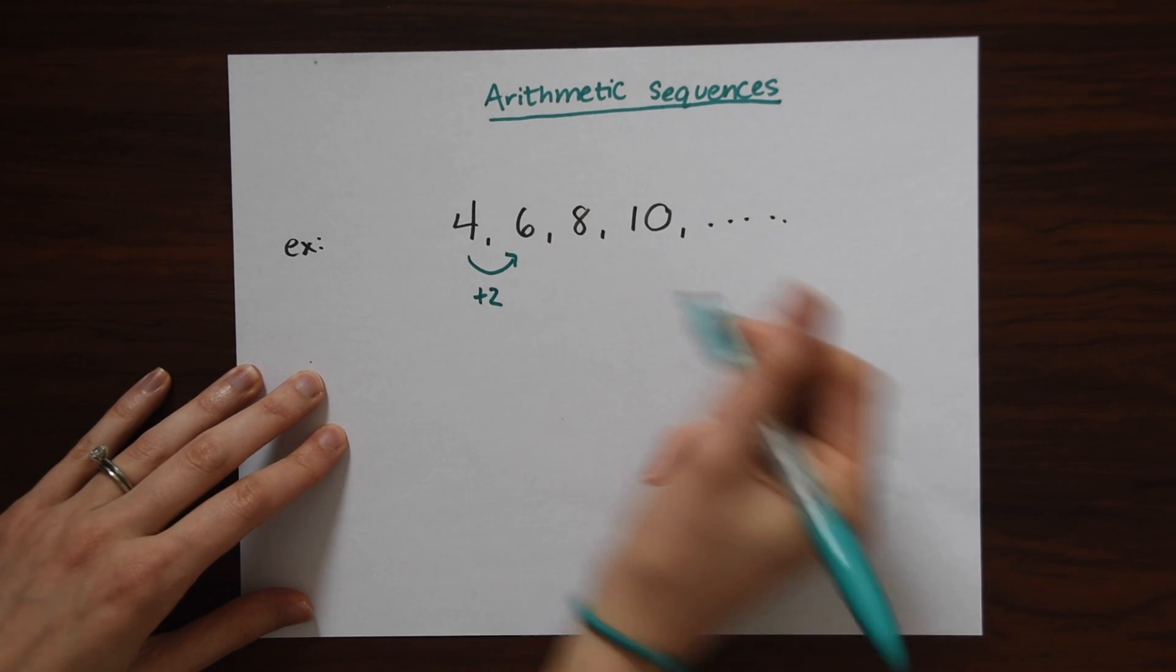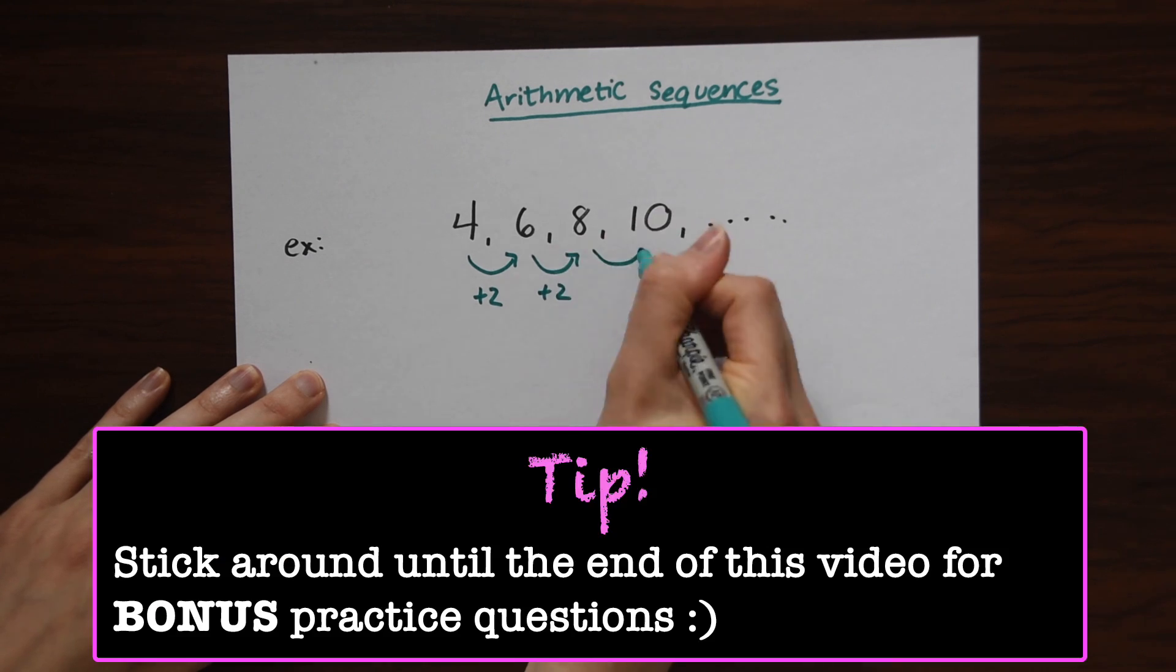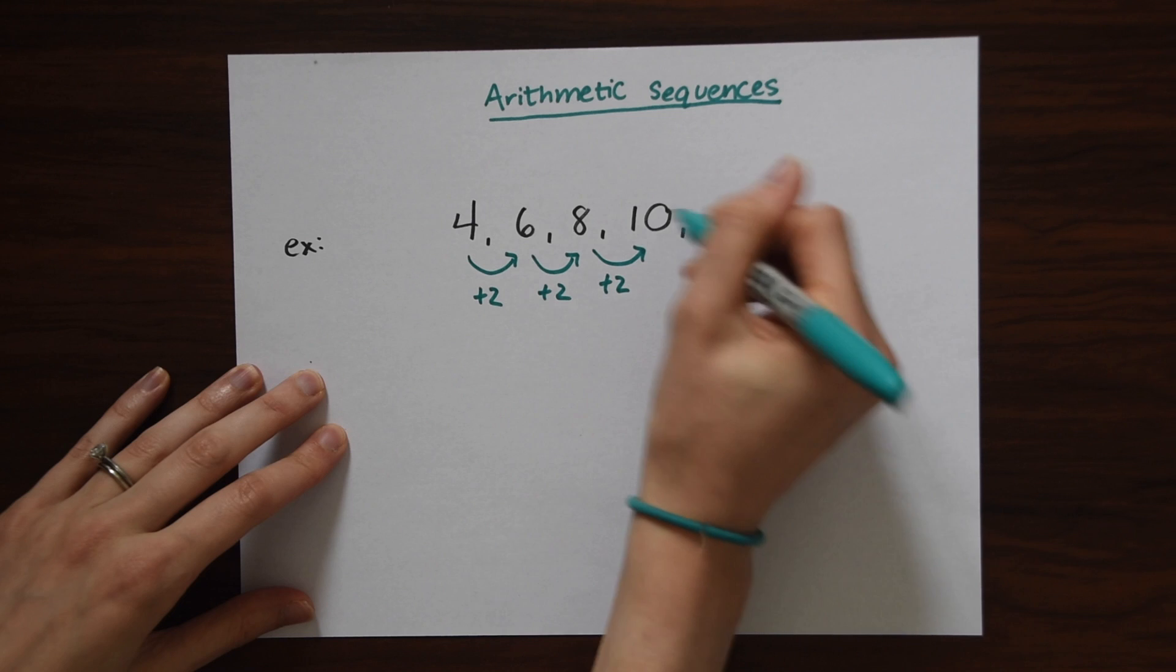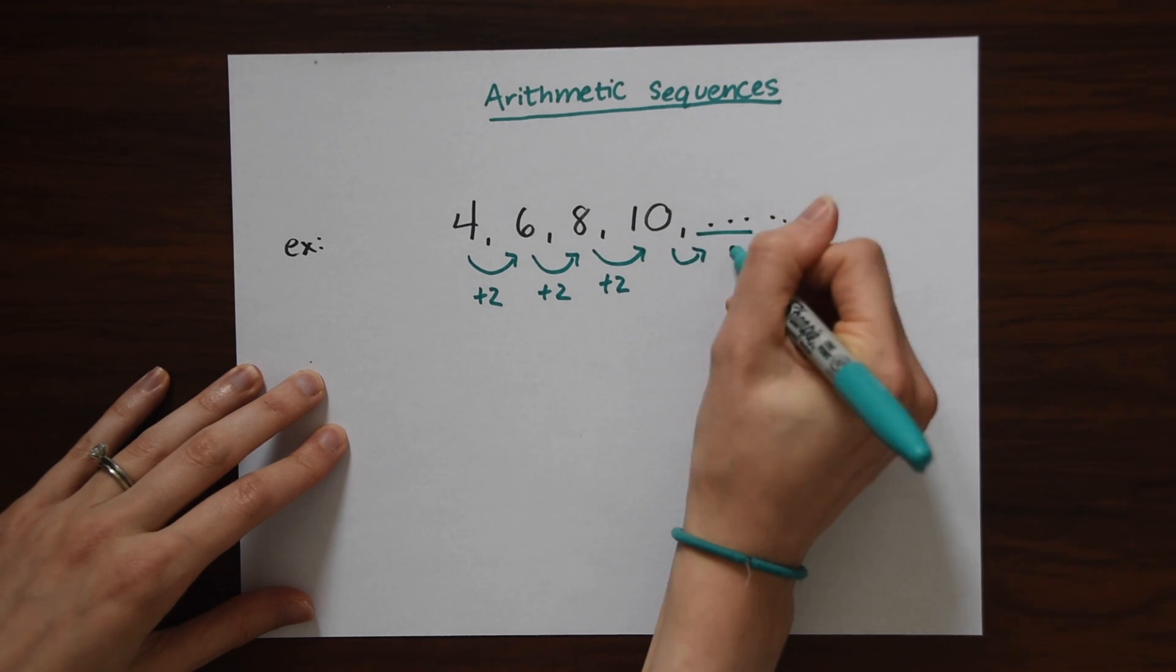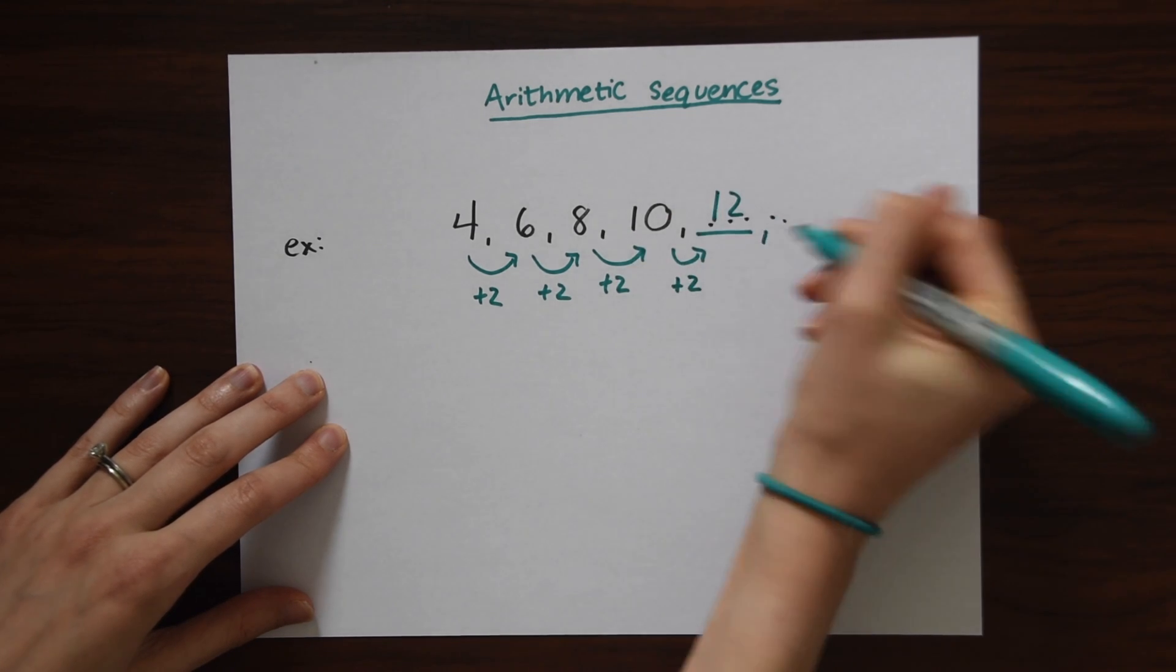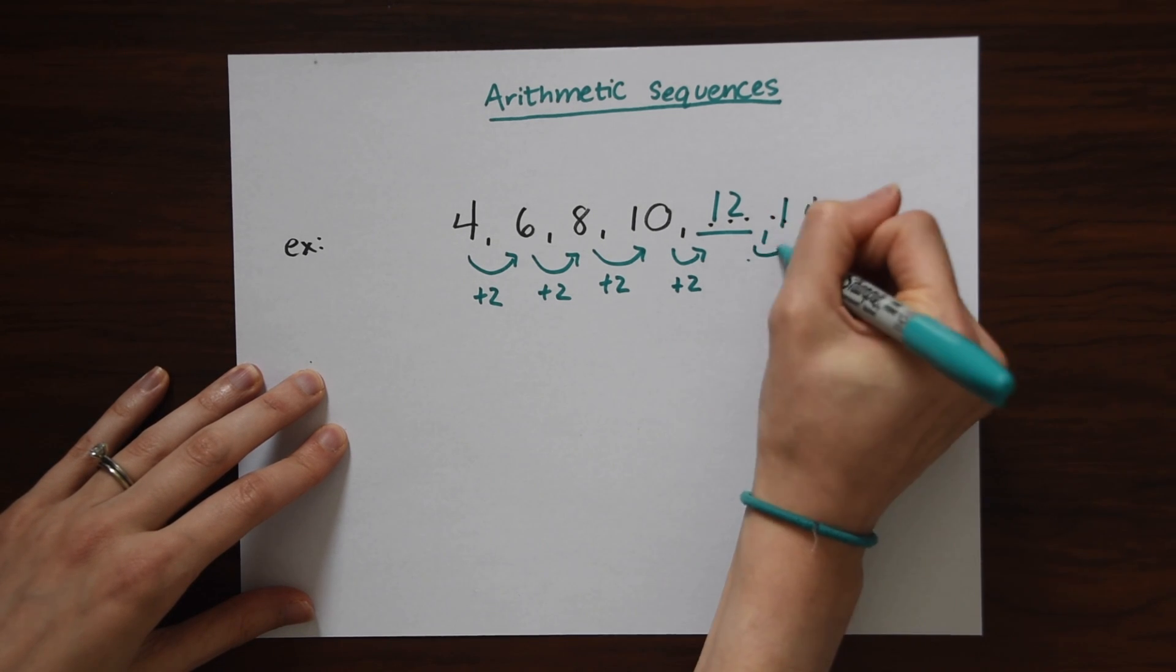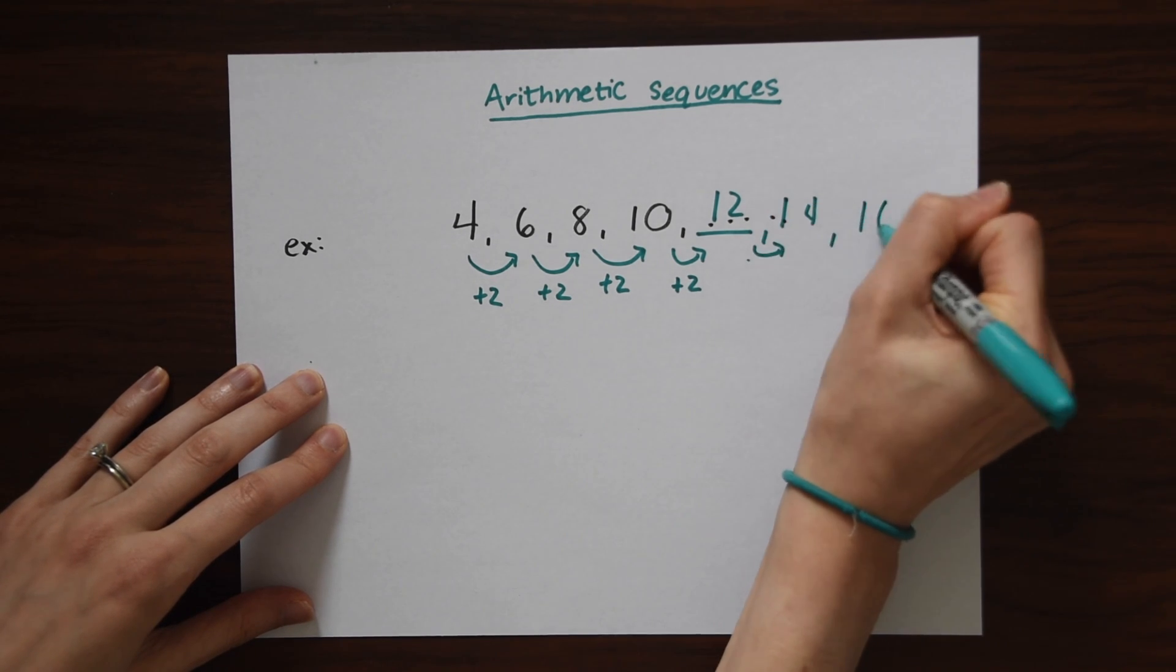4 plus 2 is 6. 6 plus 2 is 8. 8 plus 2 is 10. And if we were to keep going, the next term here would be 12, because 10 plus 2 would just be 12. And the pattern could keep continuing. We could go 14, add 2, 16, etc.